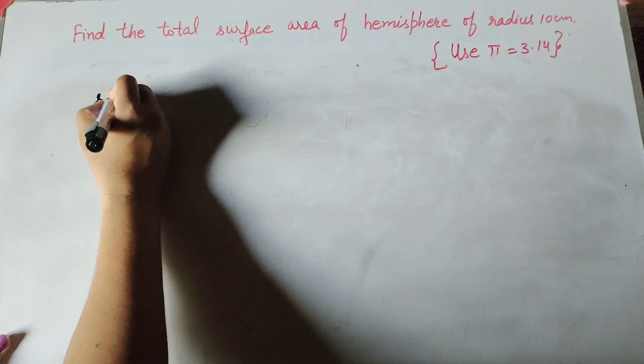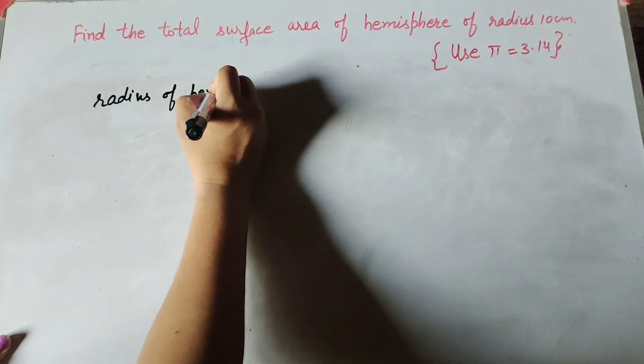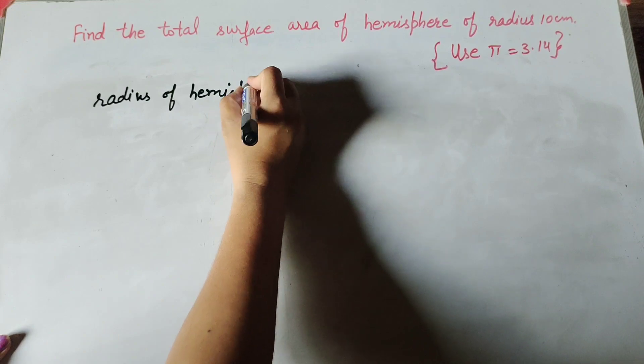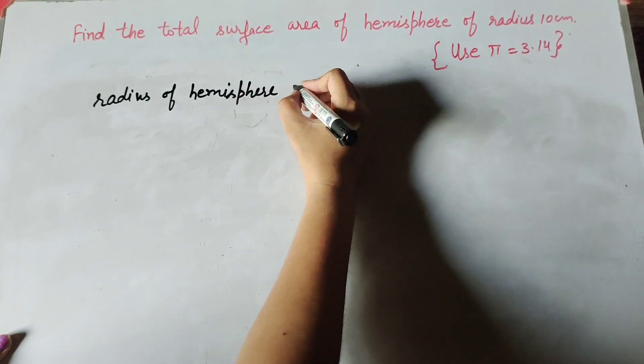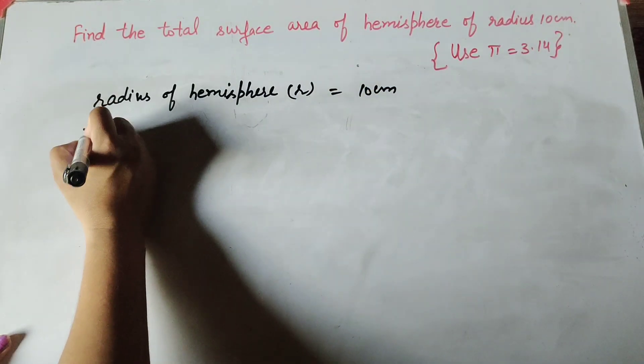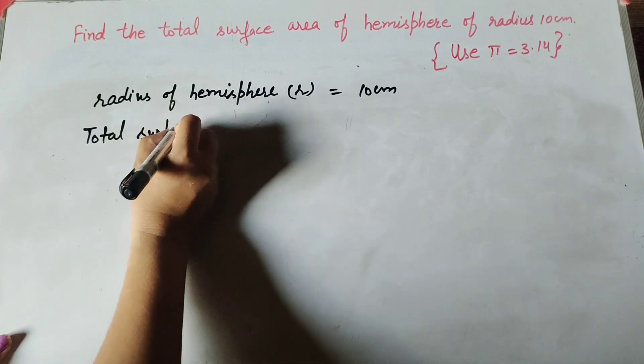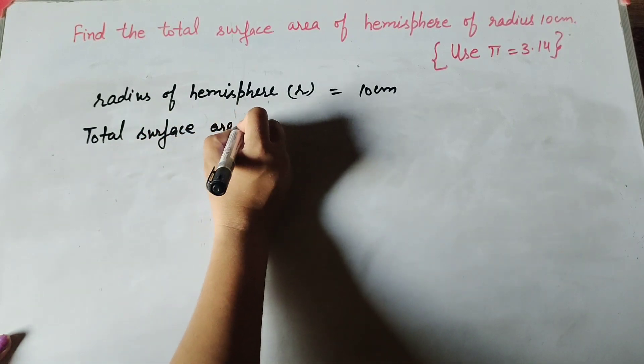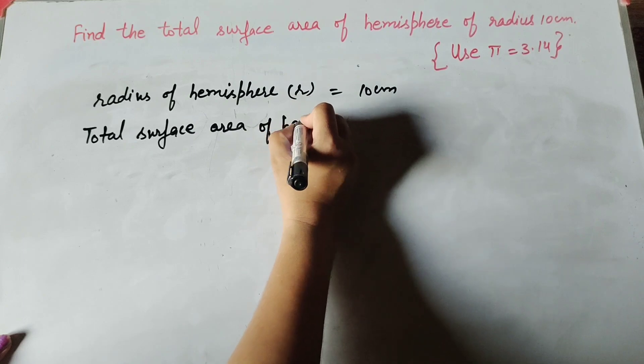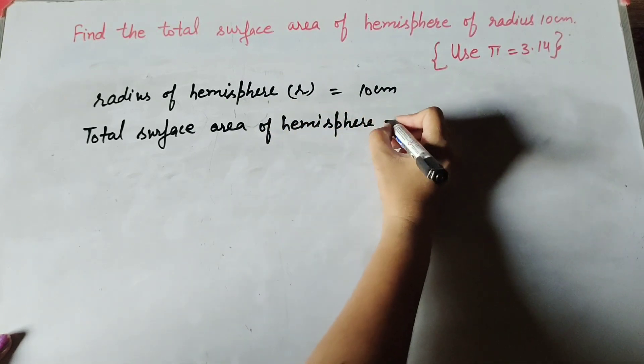Radius of hemisphere is given equal to 10 centimeter. We need to find the total surface area of hemisphere. We know the formula to find total surface area of hemisphere.